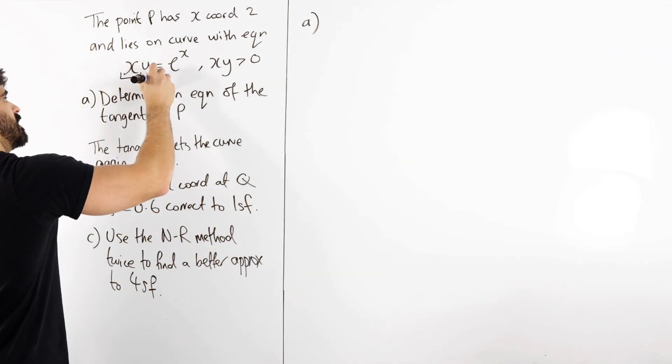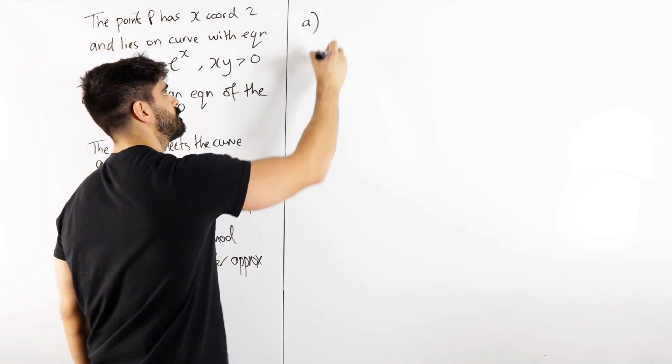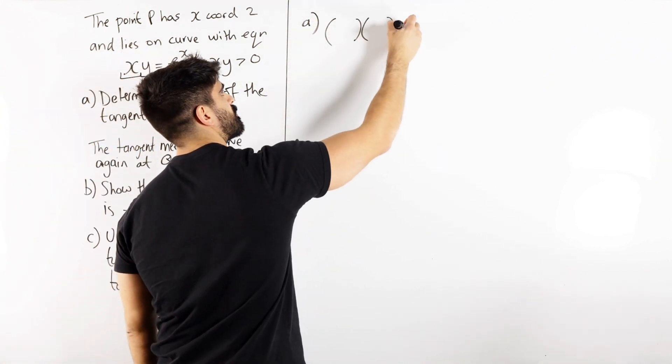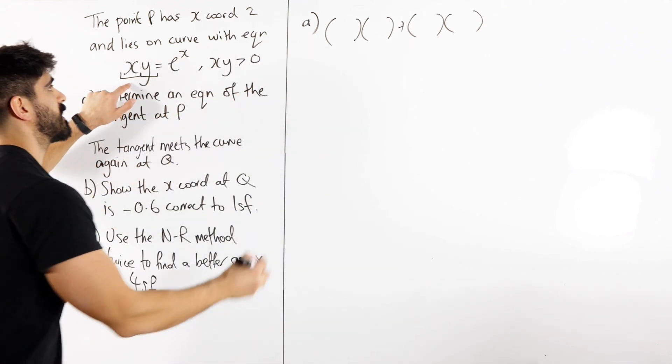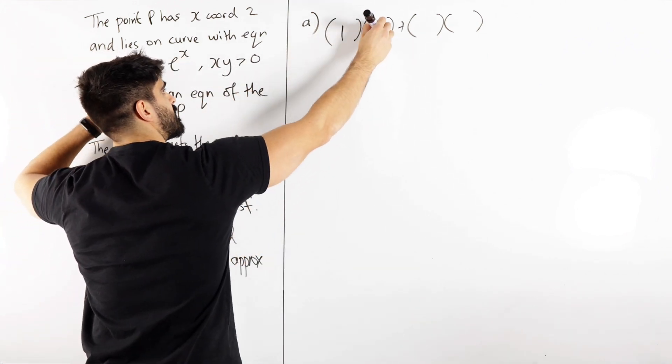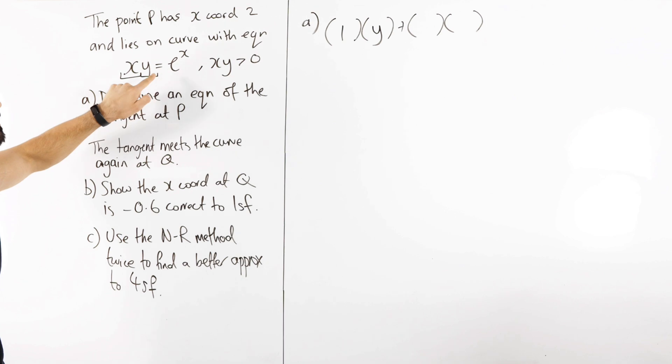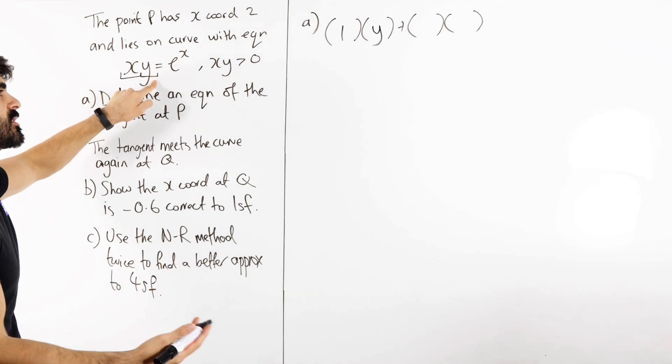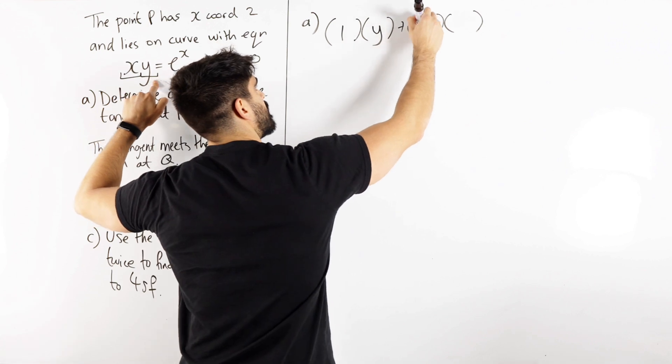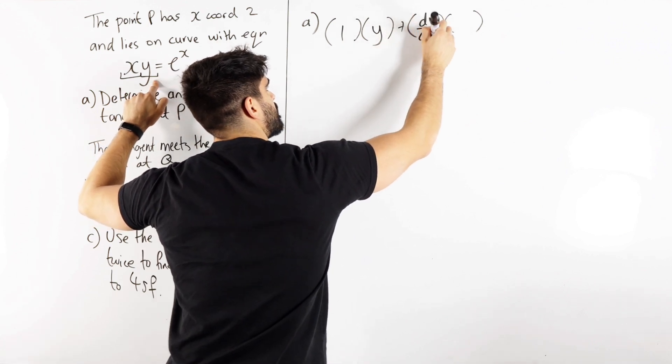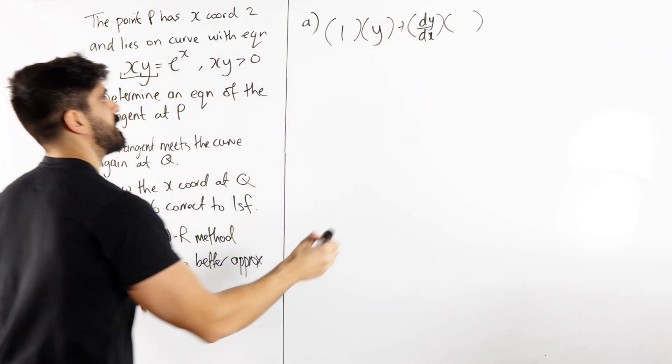Because they're two functions though, we need to use the product rule. All right, using the product rule which is super simple, differentiate the first term, x differentiates to 1, times the second term y, then we differentiate the second term, y differentiates to 1, but because we differentiate with respect to x we write dy/dx, so 1 dy/dx, then times the first term x.